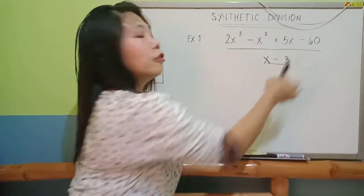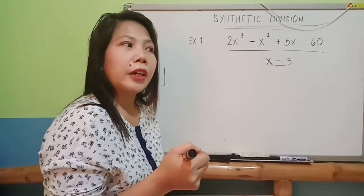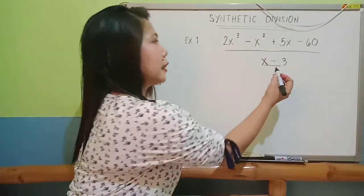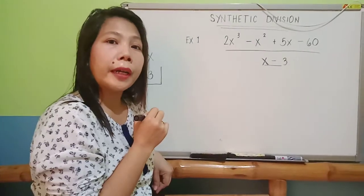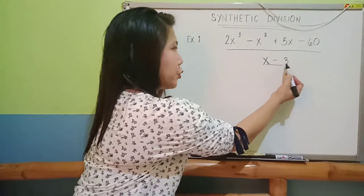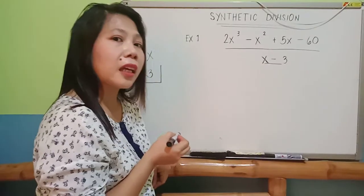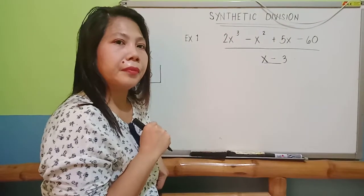To be able for you to have an idea or a shortcut, you just get the opposite value of your constant. So, if you have here a negative 3, therefore, your x would be a positive 3. It's the same thing.